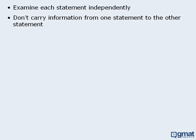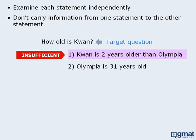I'll use the following example to show what can happen when we carry information from one statement to the other. In this question, we want to find Quan's age. So first we examine statement 1, which tells us that Quan is two years older than Olympia. We think to ourselves, this information is not sufficient. For the statement to be sufficient, we would need to know Olympia's age.